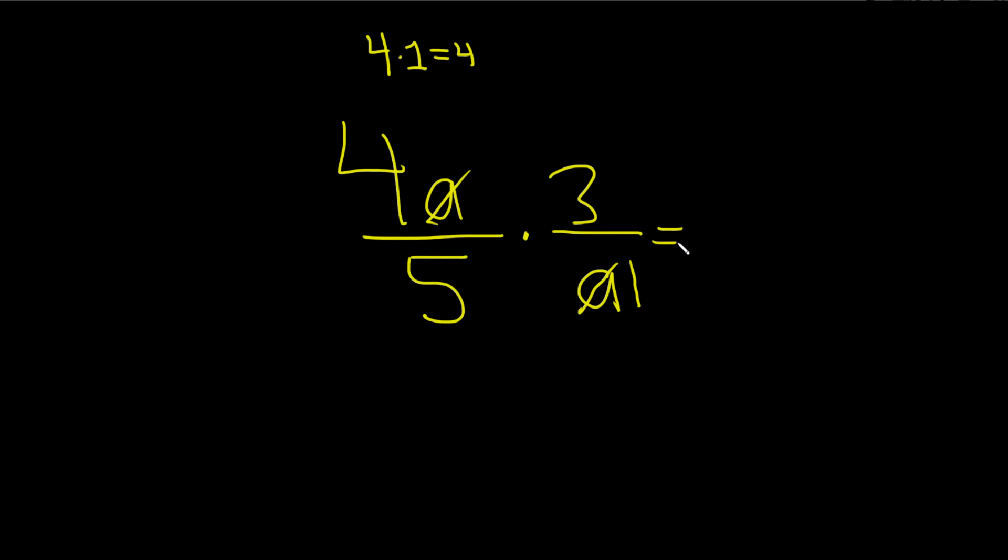Now we can finish this multiplication. Basically multiply straight across. We do 4 times 3, which gives us 12 over, and then 5 times 1, which gives us 5.